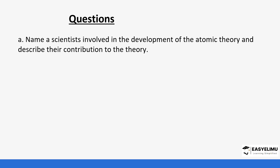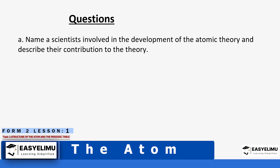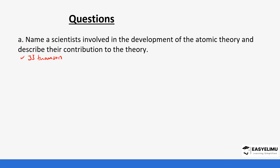Let's do a few practice questions. Name a scientist involved in the development of the atomic theory and describe their contribution. For example, J.J. Thompson discovered the electron and discovered that the electron was negatively charged. James Chadwick discovered the neutron. These were some of the major scientists who discovered important parts of the atom. Make sure you go back and check on all the scientists mentioned at the beginning of the session.